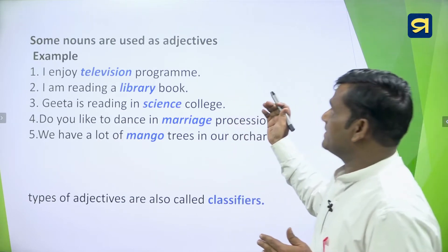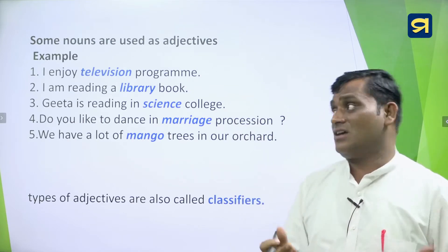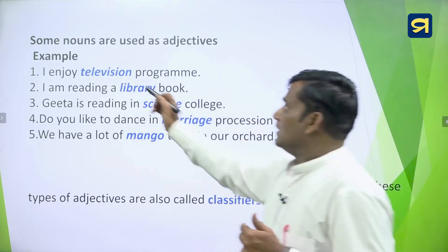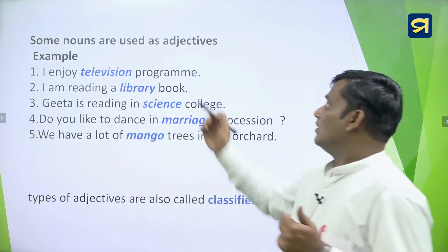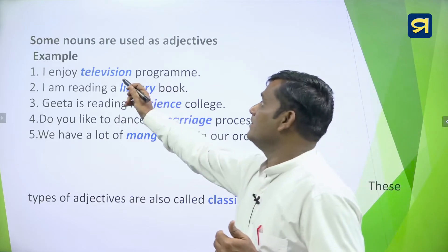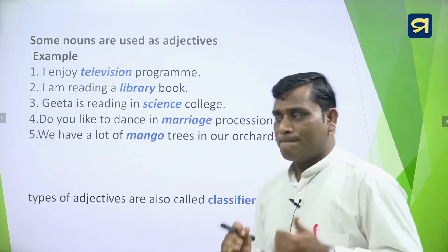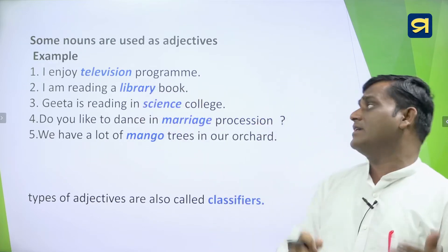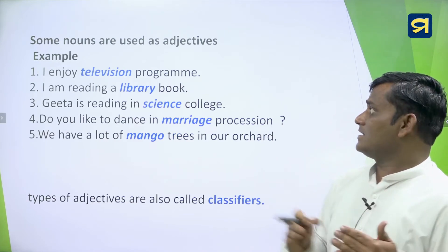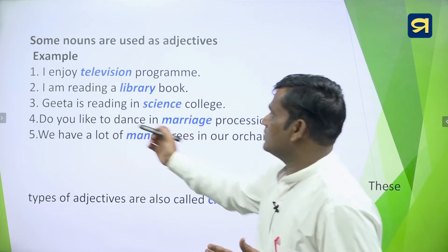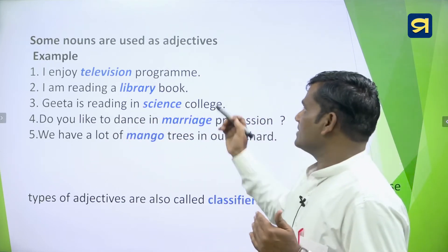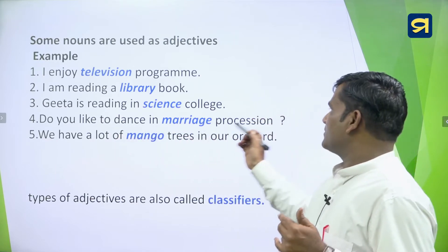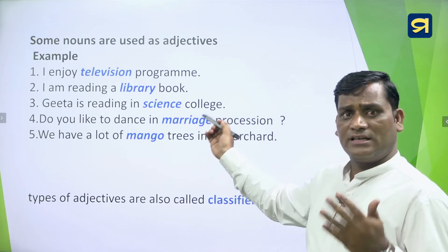Now, some nouns are used as adjectives in day-to-day life. For example: 'I enjoy a television program' — television is a noun, program is a noun, but here television is used as an adjective. Similarly, 'I am reading a library book' — library is a noun but used as an adjective. 'Gita is reading in a science college' — science is a noun used as an adjective. 'Do you like to dance in a marriage procession?' — marriage is used as an adjective here.